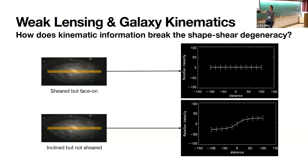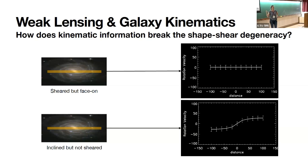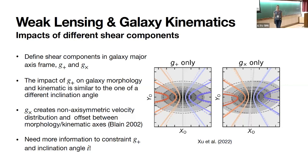Let's first understand what we want to do with a cartoon. Without spectral information, two galaxies would look the same. Due to this shape-shear degeneracy, we can't tell whether a galaxy is sheared but face-on or inclined but not sheared. But with spectra — if we take the major-axis rotation curve — we can tell that one galaxy must be face-on while the other must be inclined. We'll make this quantitative using the galaxy scaling relation, but first let's talk about the effect of shear on galaxies and how we use this kinematic information.